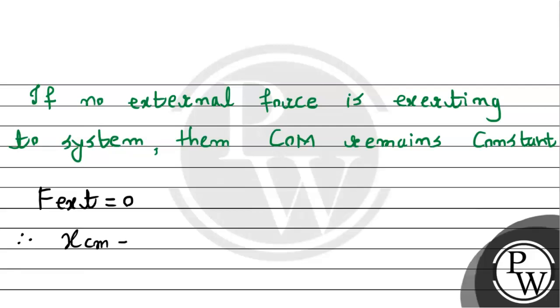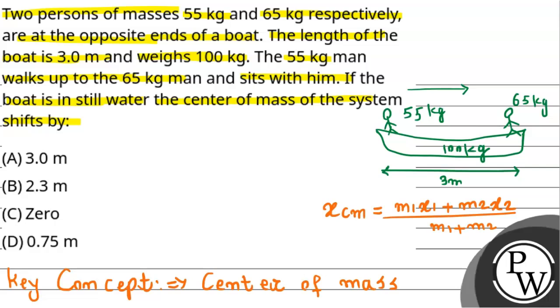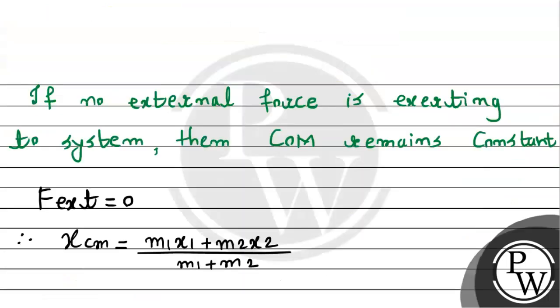Initially, the center of mass X_cm equals m1*x1 plus m2*x2 divided by m1 plus m2. The same center of mass will be right there, meaning it won't shift. If it's not shifting, then we don't need to calculate the initial and final center of mass because there will be no shift since external force is zero.